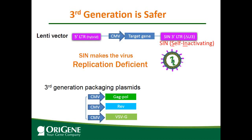In addition, in the third generation system, the packaging plasmids are provided on three separate plasmids, further lowering the chance of viral genes recombining back into the lentiviral vector. This makes the third generation safer.